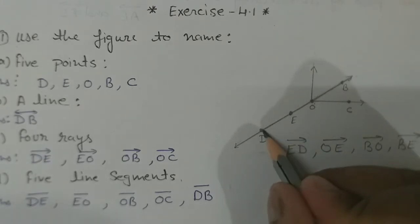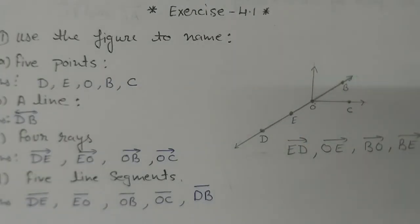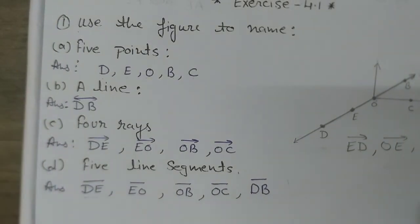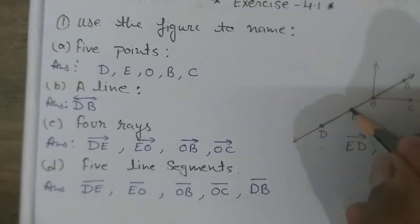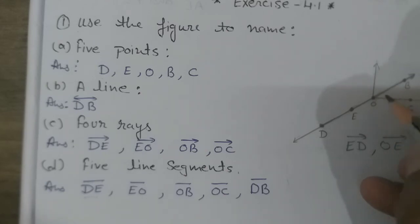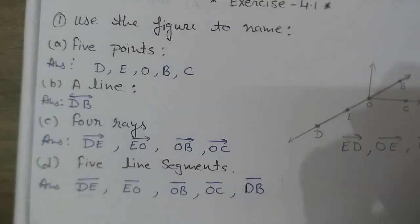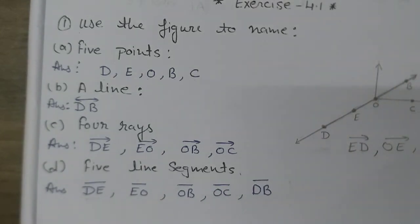For question D — five line segments. For line segments we do not put arrows; we just use the bar symbol. The first line segment is DE, then EO, then OB, then OC, and DB. There can be many line segments you can find.